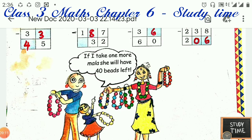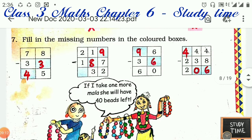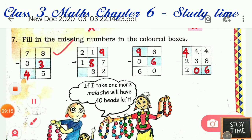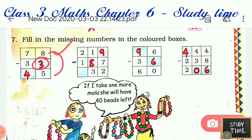Next, fill in the missing numbers in the colored boxes. For example, 78 is given. Subtract 8 minus 5 and write 3 here, then 7 minus 3 is 4. In the same way, fill in the blanks; I have subtracted — you can subtract and check the answers.